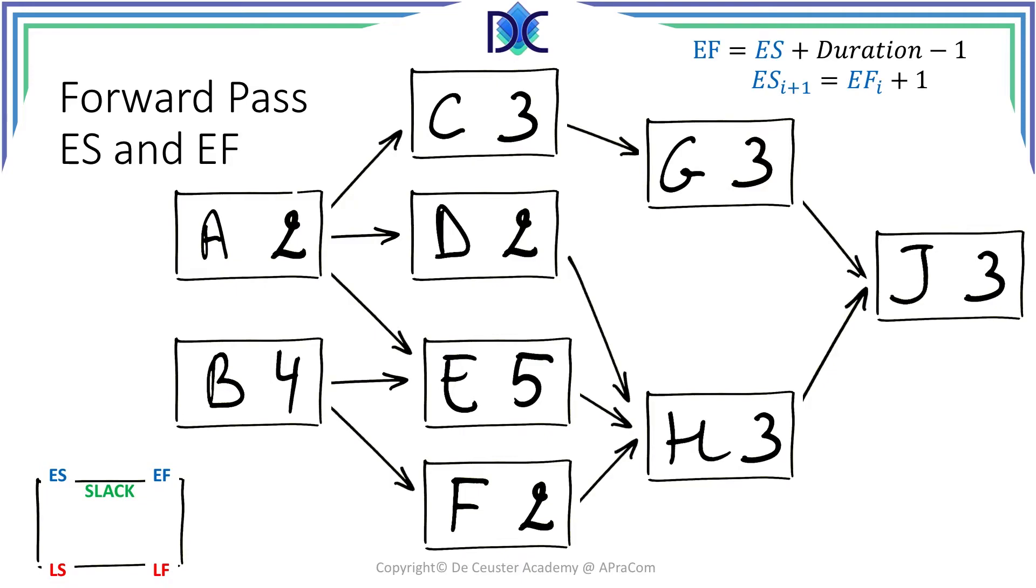When we look at the project we see that there are two activities which have no precedence. It means they are the first activities that we will start working on once the project starts. Let us assume that we will start with the project on April the first. So activity A will start on April 1st.